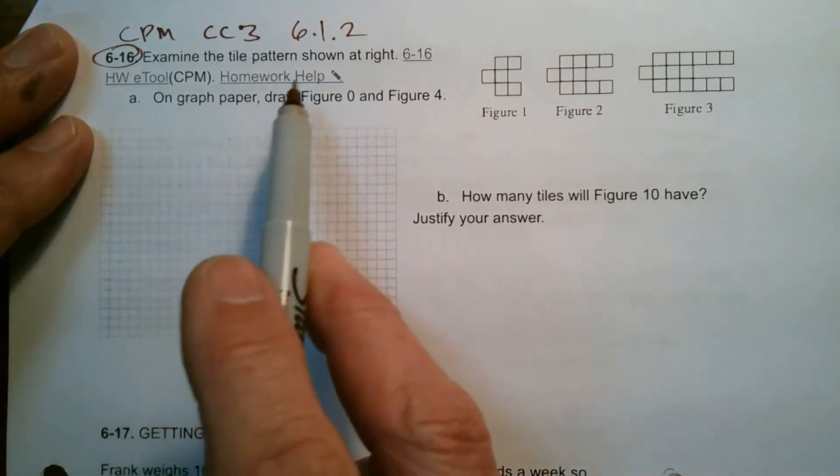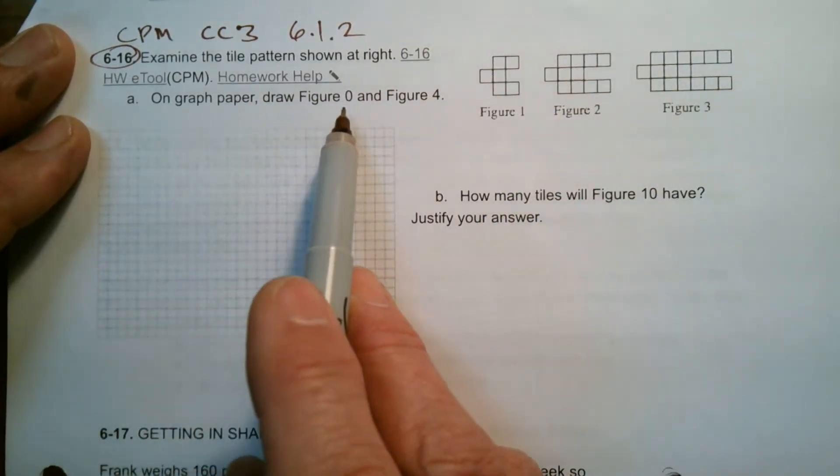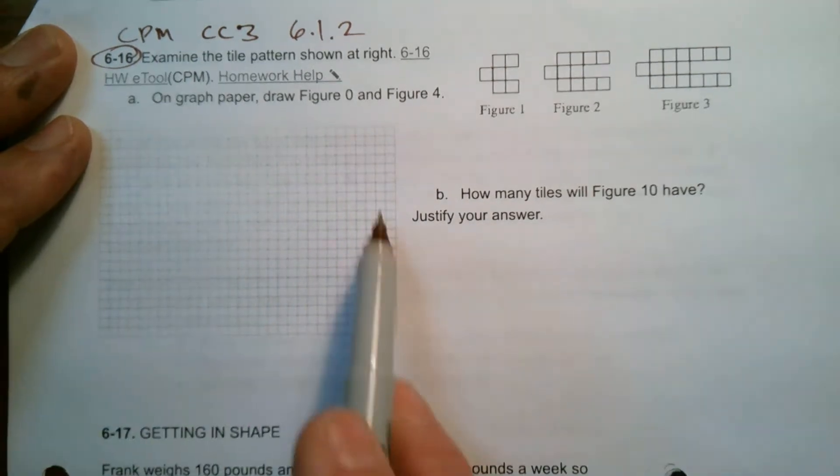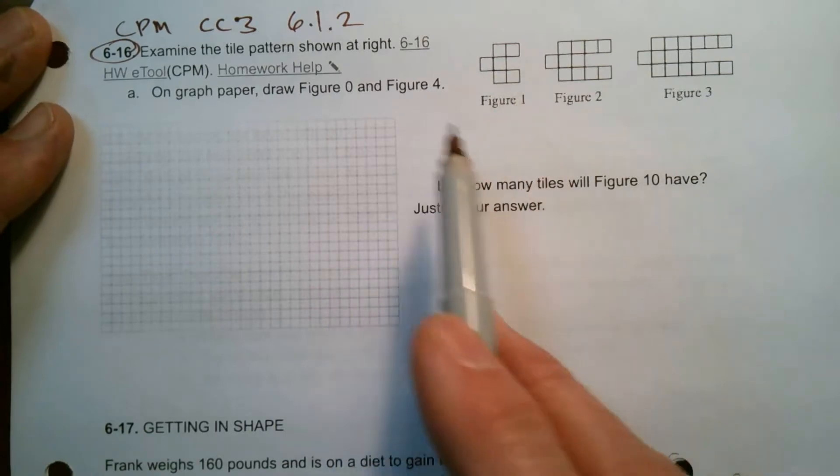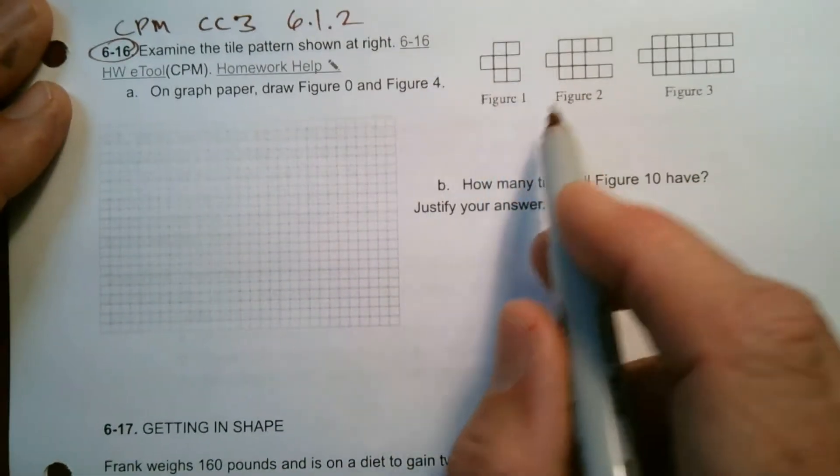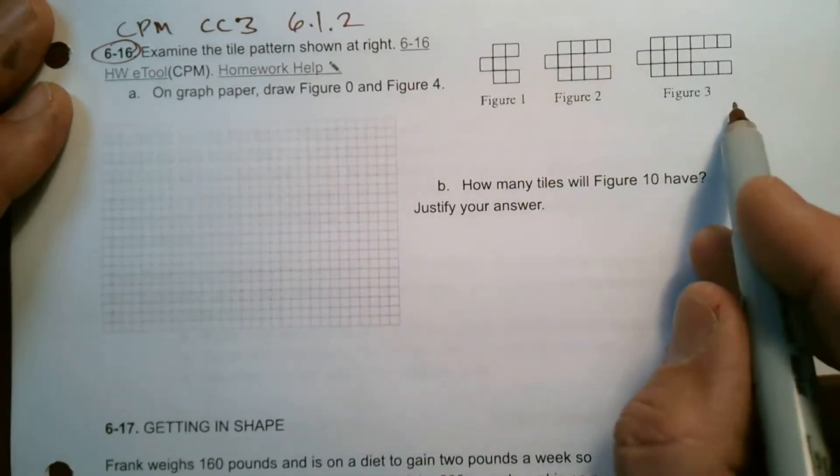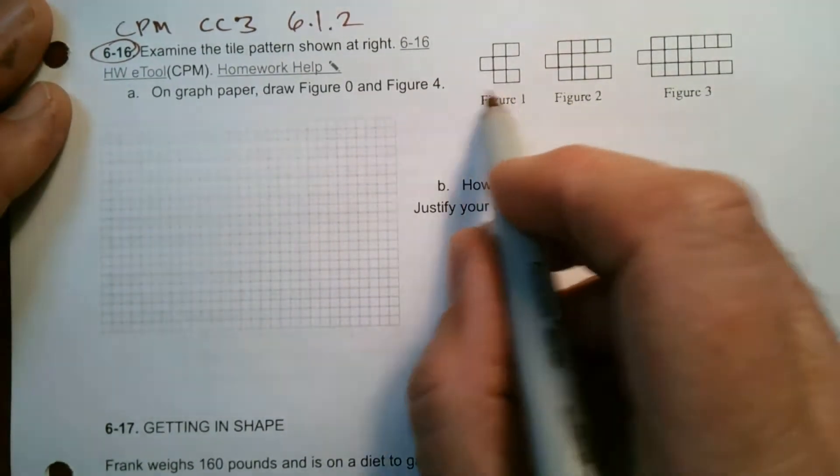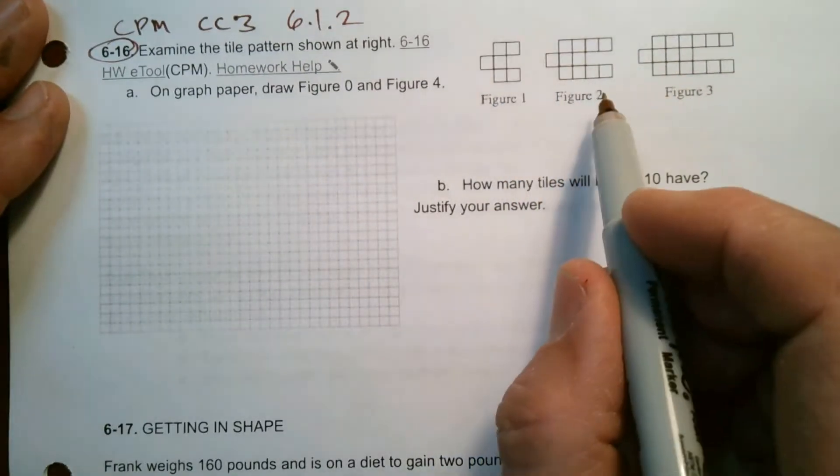It says examine the tile pattern shown at the right, and then on graph paper draw Figure 0 and Figure 4. I've got graph paper here to do the little squares if you want, or you can draw them elsewhere. So how do we figure this out? How do I determine what Figure 4 would look like, and also Figure 0?